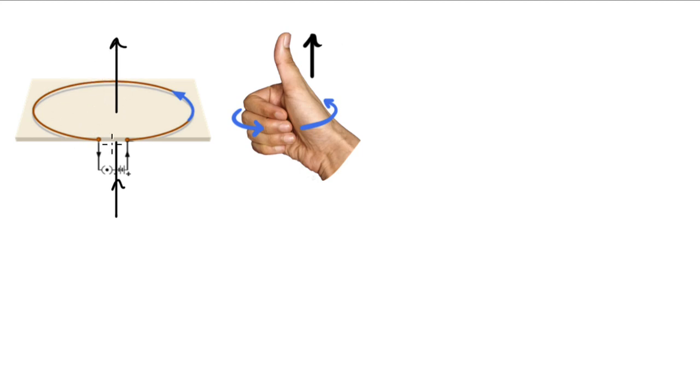This immediately means that this loop starts acting like a tiny bar magnet with the north pole up and the south pole down. So you can also think of the thumb pointing the north pole. Since the thumb is pointing up, it's saying that the north pole must also be pointing up.